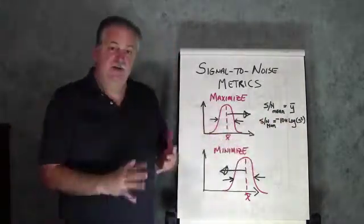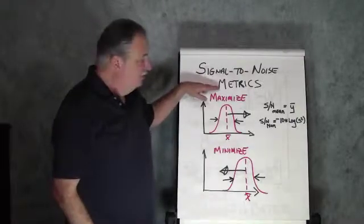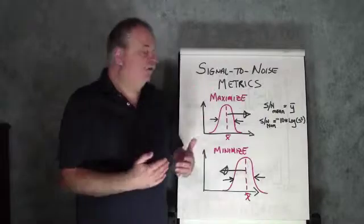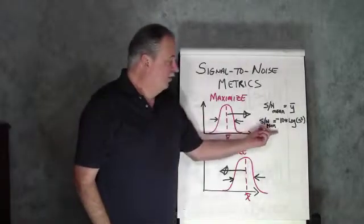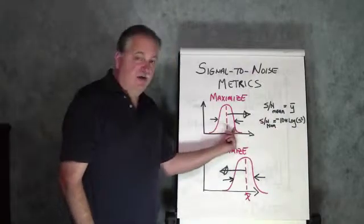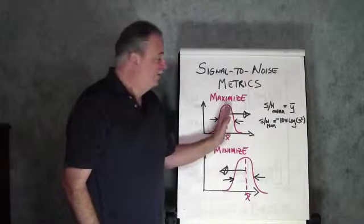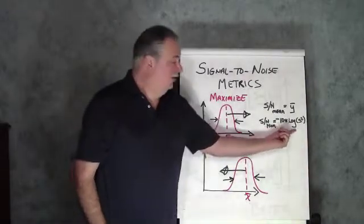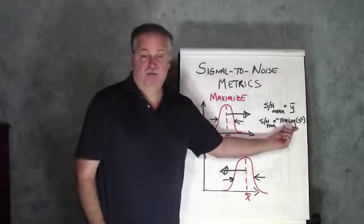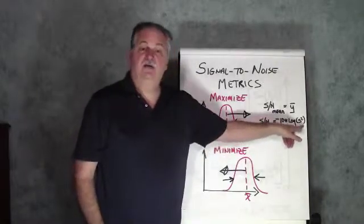Now, a performance metric that was originally put together by Sir Ronald Fisher, the father of modern-day statistics back in the 20s, was to look at the log of the standard deviation. Now, Dr. Taguchi has put together a series of signal-to-noise metrics that we can use, and he has a common way to evaluate them. So, his formula for this nominal is best, which is looking at variables that are going to reduce the variation.